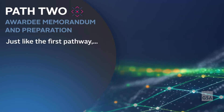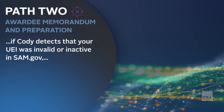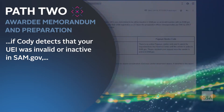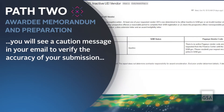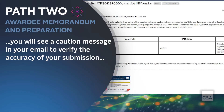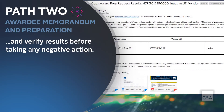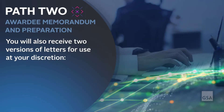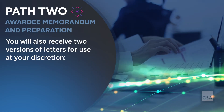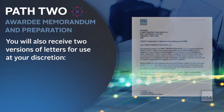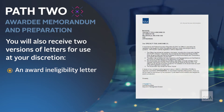Just like the first pathway, if Kodi detects that your UEI was invalid or inactive in SAM.gov, you will see a caution message in your email to verify the accuracy of your submission and verify results before taking any negative action. You will also receive two versions of letters for use at your discretion: a time extension letter and an award ineligibility letter.